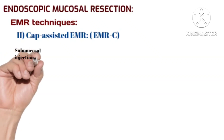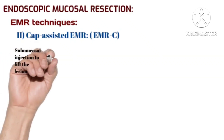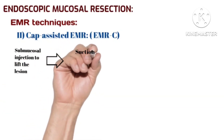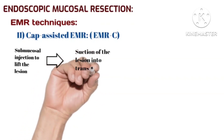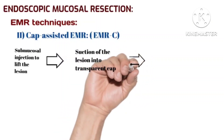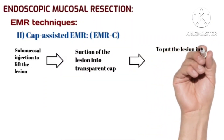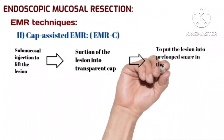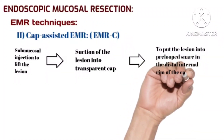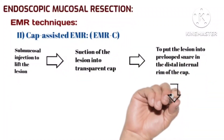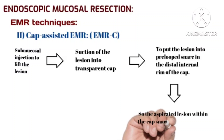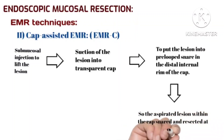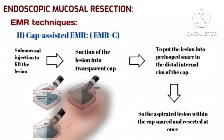The second EMR technique is cap-assisted endoscopic mucosal resection. Submucosal injection is first performed to lift the lesion, followed by suction of the lesion into a transparent cap. The lesion is placed into a pre-looped snare at the distal inner rim of the cap, so the aspirated lesion within the cap is snared and resected at once. This image shows the steps of cap-assisted EMR.